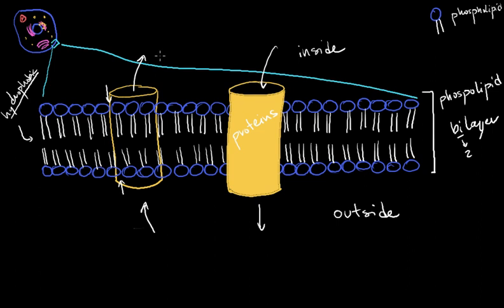And they have certain sizes, so it'll let some things in and some things out. So because it'll let some things in and some things out, we actually say that the cell membrane is selectively permeable.